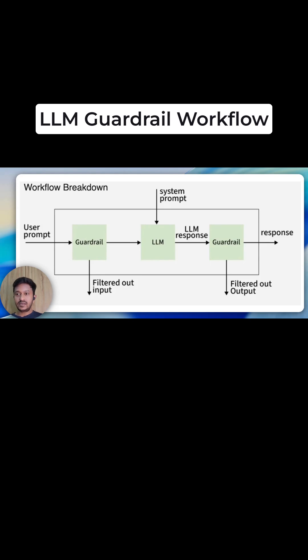Hey guys, here you can see a simple workflow breakdown image of an LLM guardrail. As you can see, there are two guardrails sitting in between the user input, user prompt, and the response.